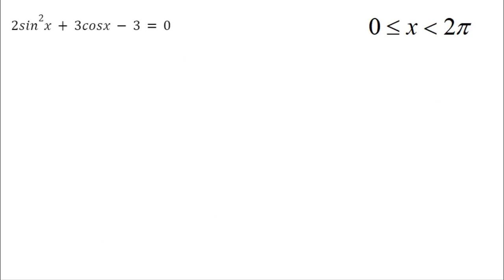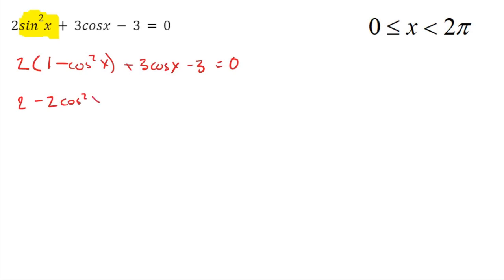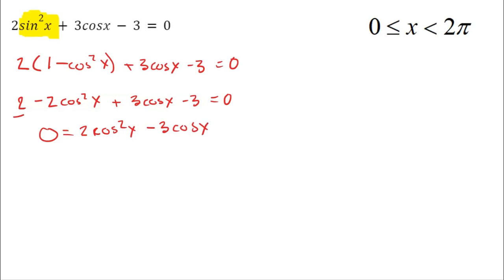Here we see another equation: 2 sine squared of x plus 3 cosine of x minus 3 equals 0, with two different trig functions. Let's replace sine squared of x using the Pythagorean identity — sine squared of x equals 1 minus cosine squared. I'll replace the sine squared with 1 minus cosine squared of x, giving us 2 times the quantity 1 minus cosine squared of x, plus 3 cosine of x minus 3 equals 0. Distributing the 2: 2 minus 2 cosine squared of x plus 3 cosine of x minus 3 equals 0.